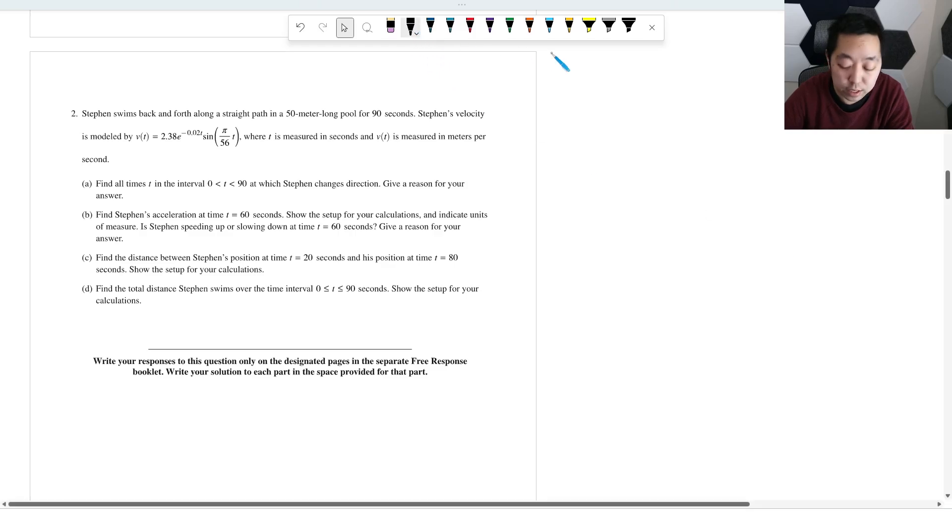All right, let's take a look at the second FRQ on the AB exam for the 2023 AP Calculus exam. The solutions aren't out, so if I have any corrections, these are my best guesses at what the solutions look like. If I have any corrections, I will put them in the comment as a pinned comment.